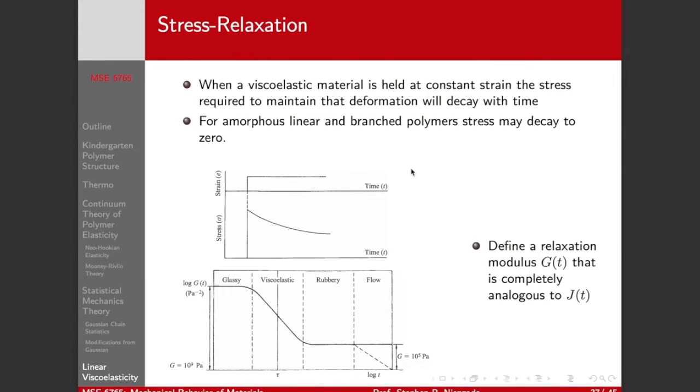You can do short term experiments at lower forces and higher temperatures. Or you can do long term experiments at lower temperatures and longer times and higher forces. Stress relaxation is the opposite. Here we're going to hold a constant strain and we'll look at the stress that is required to maintain that deformation. And we'll see that it's going to decay with time. For amorphous linear low molecular weight branched polymers, this stress may decay to actually zero and then you would have a permanent deformation completely at that point. So here we hold, we're keeping a constant strain and we look at how our stress decays with time. And we define a relaxation modulus that is completely analogous to the creep modulus.